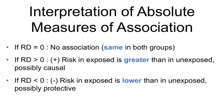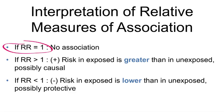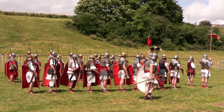For absolute measures of association, i.e., differences: if the risk difference is equal to 0, then there is no association — the risk is the same in both groups. If the risk difference is greater than 0, then the risk in the exposed is greater than in the unexposed. If the risk difference is less than 0, then the risk in the exposed is lower than in the unexposed. Note that the null value for differences is 0, while for ratios the null value is 1.